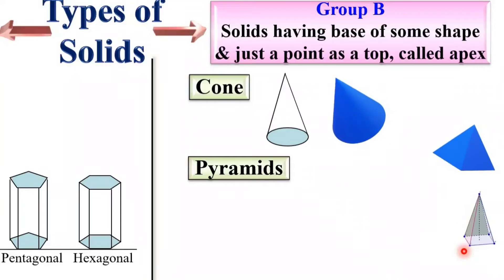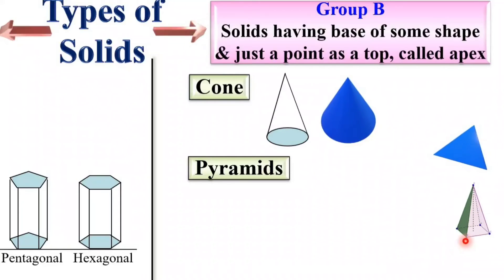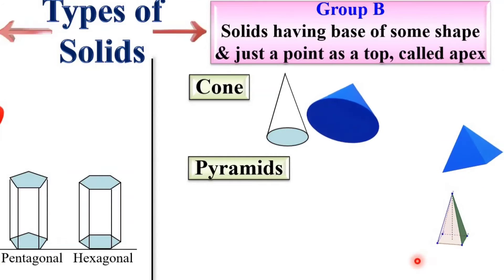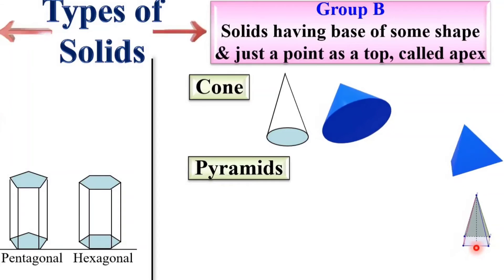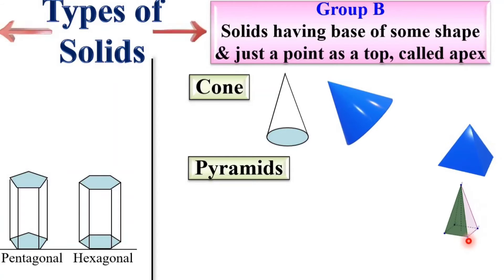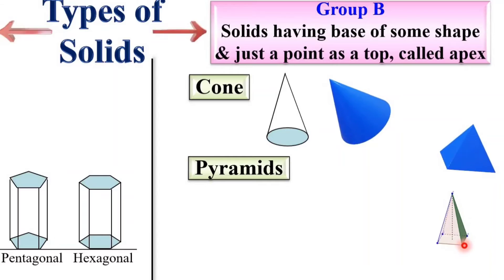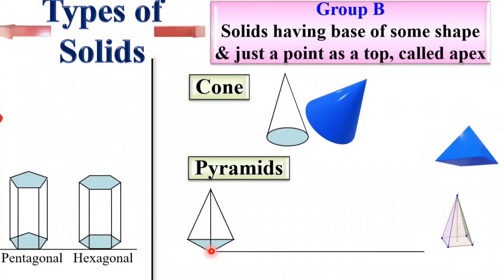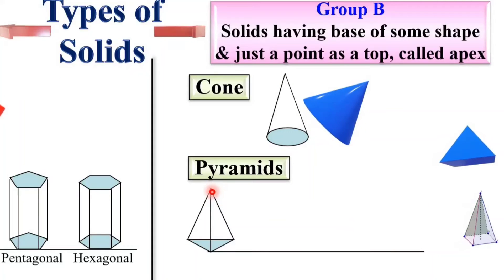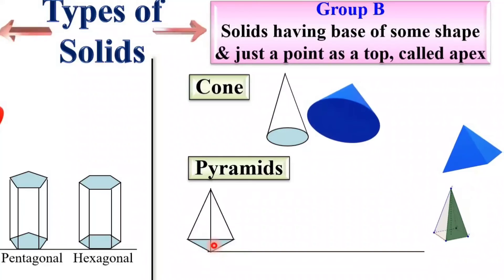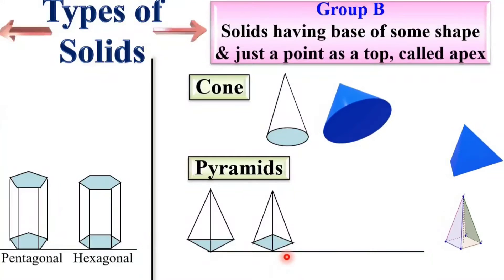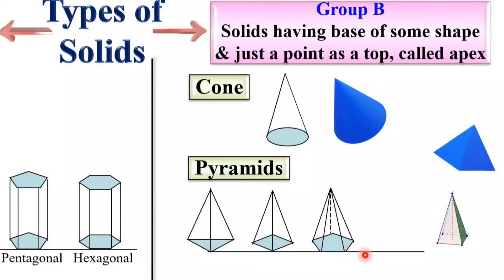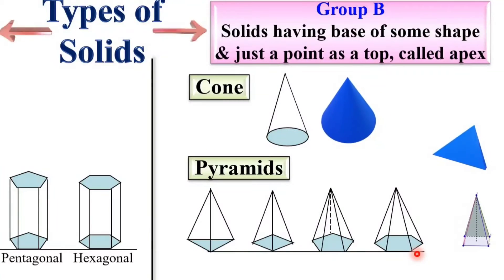The base of a pyramid can be any polygon — square, rectangle, triangle, pentagon, hexagon, etc. If the base is a triangle and the top is the apex point, it is a triangular pyramid. If the base is a square, it is a square pyramid. Similarly, there are pentagonal pyramids and hexagonal pyramids.